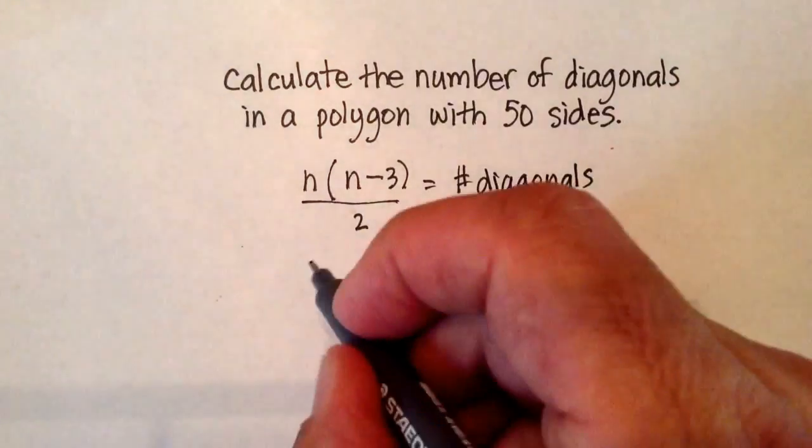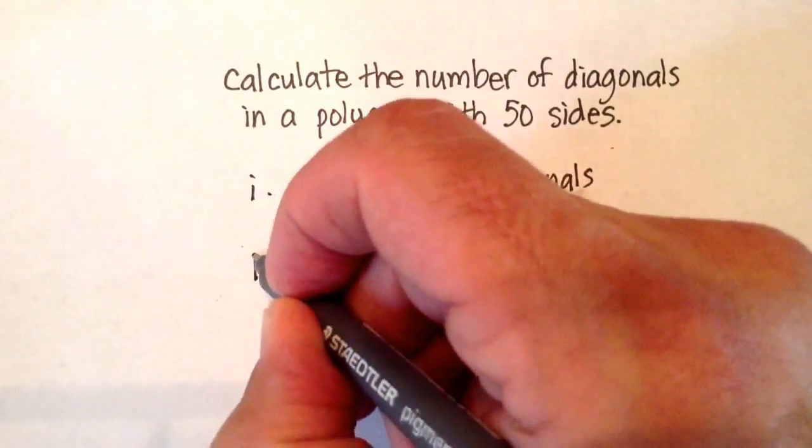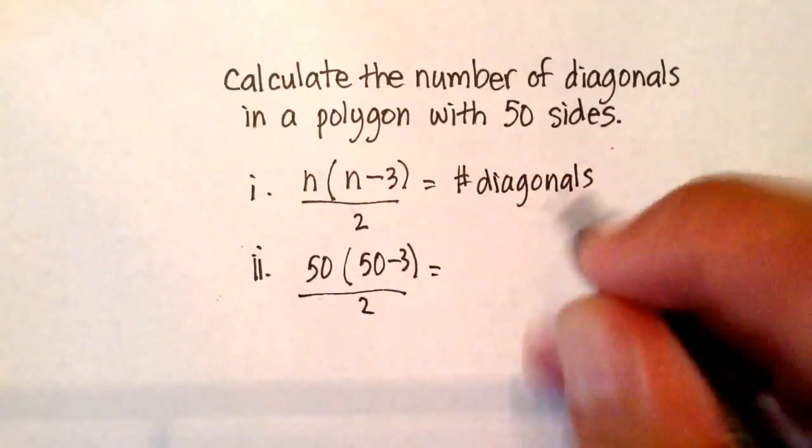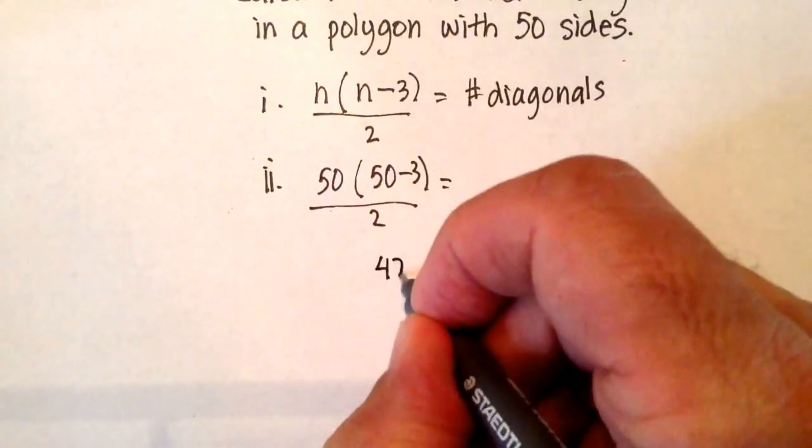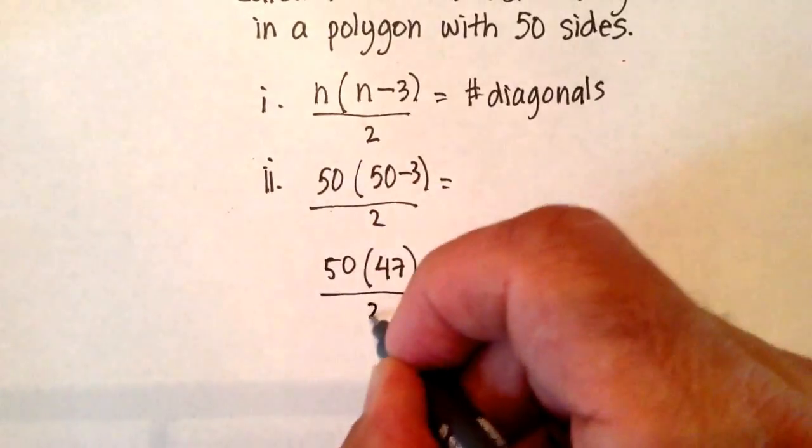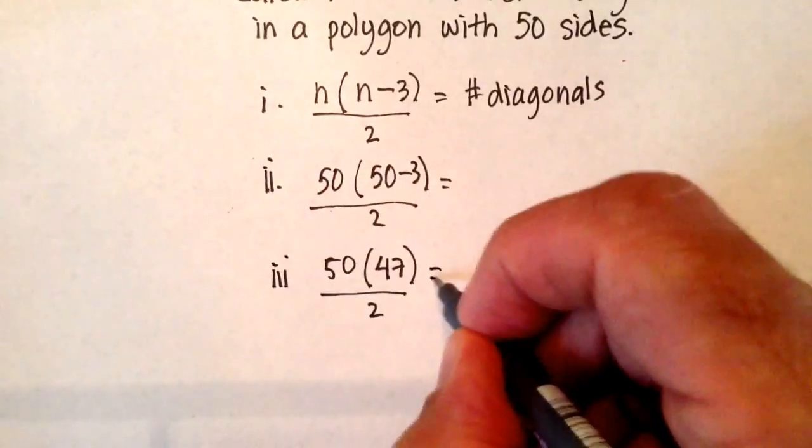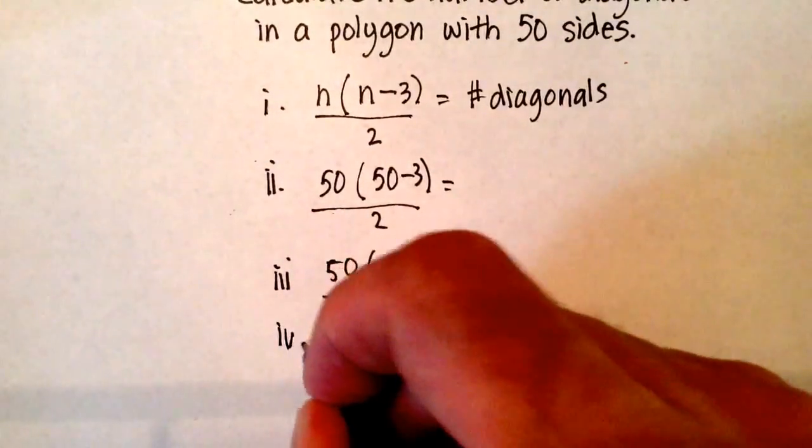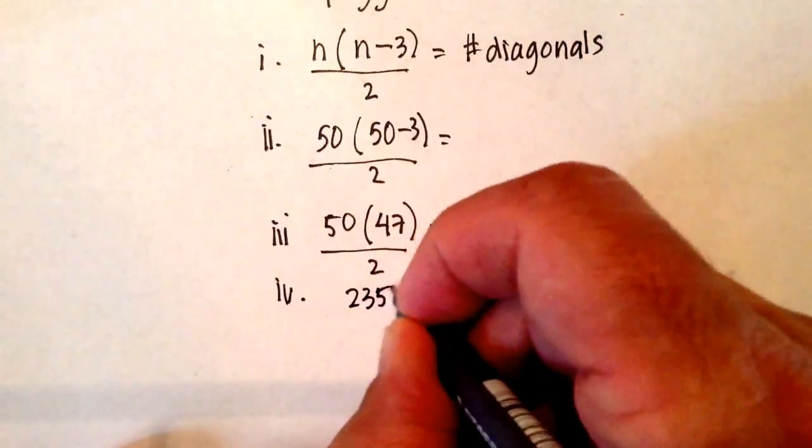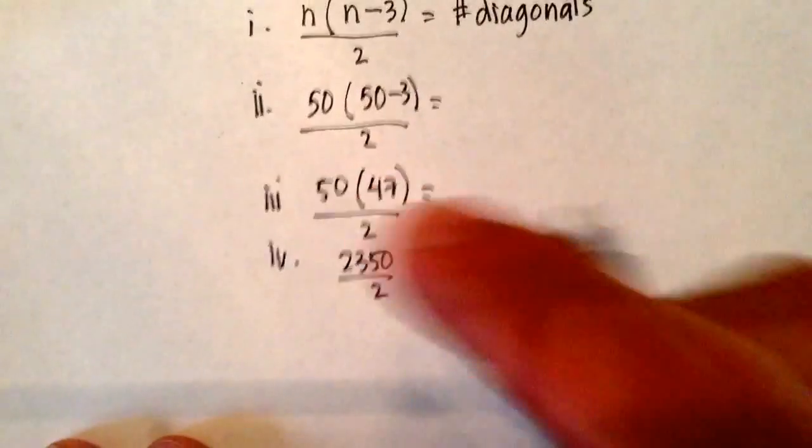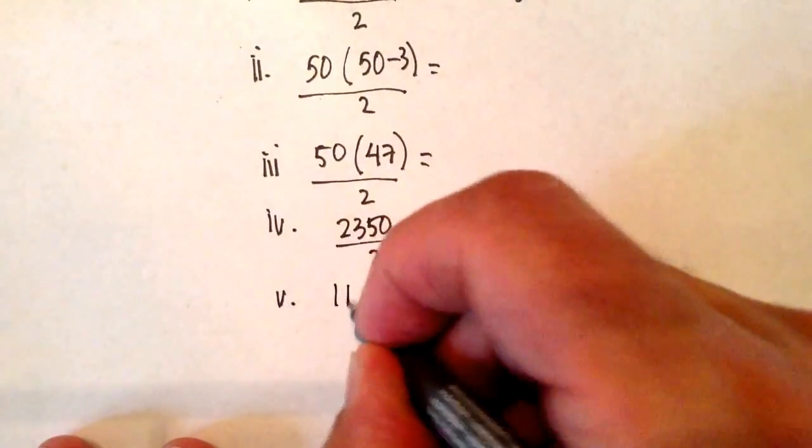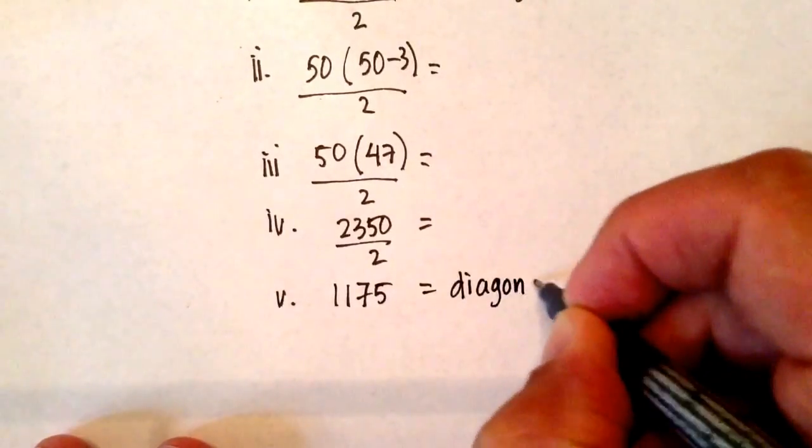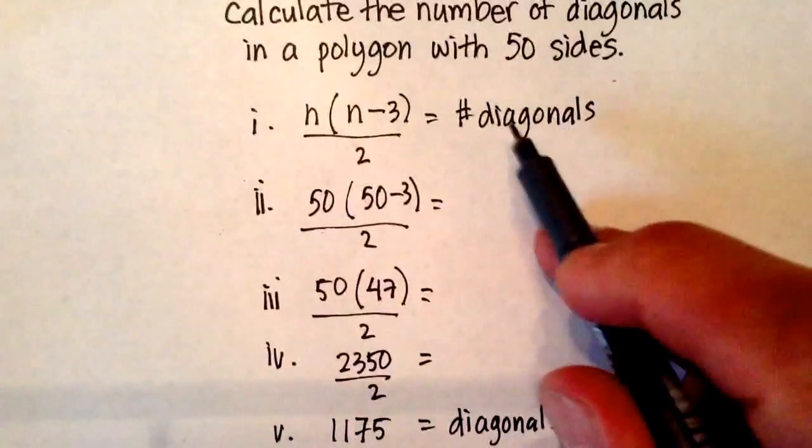Let's put our numbers in. 50, that's our first step. 50 times 50 minus 3 over 2. 50 minus 3 is 47. 47 times 50, all over 2. And let's just do a quick calculation. 50 times 47 is going to give us 2,350 divided by 2. And then for my last step, divide it by 2, and I get 1,175 diagonals in a polygon that has 50 sides.